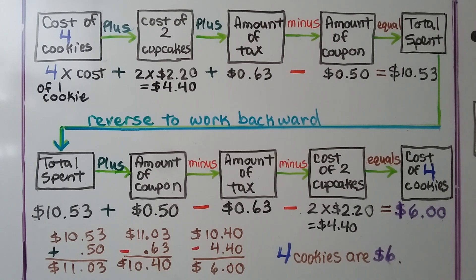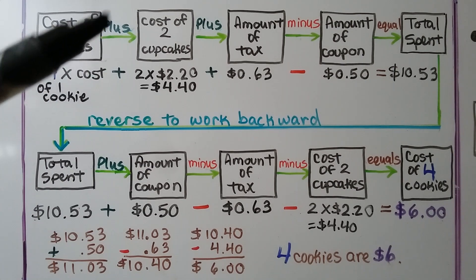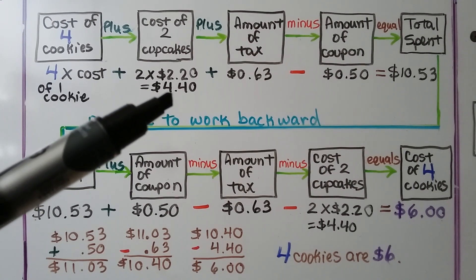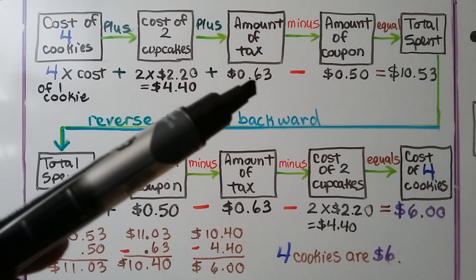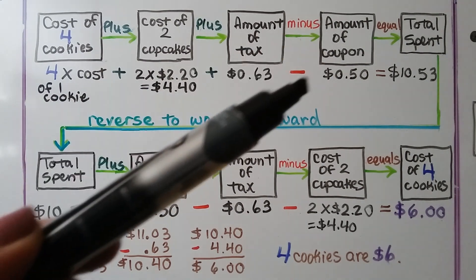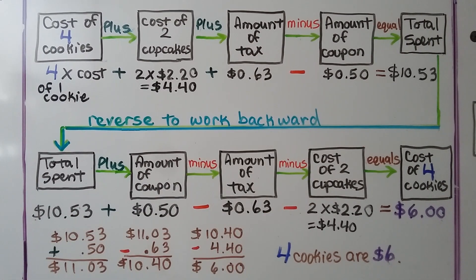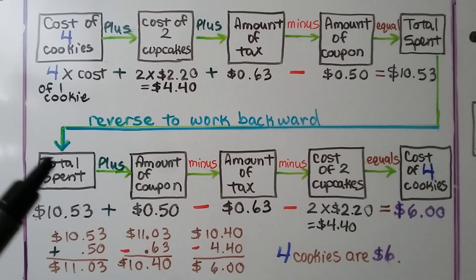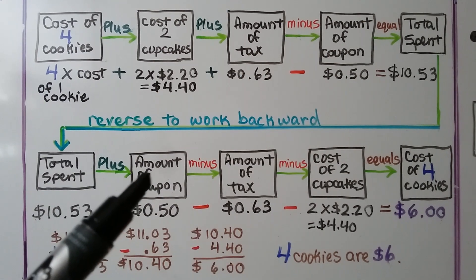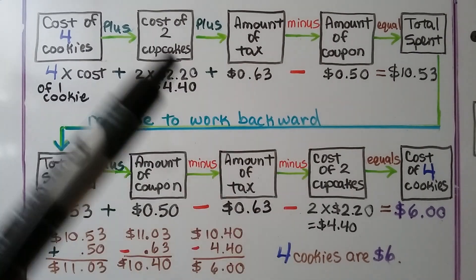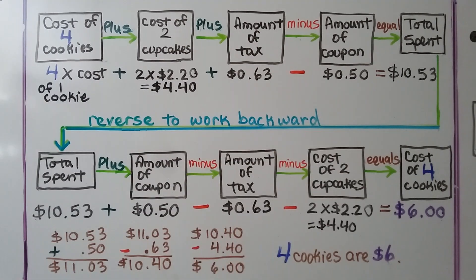In our flowchart, we start with the cost of four cookies — that's four times the cost of one cookie — plus the cost of two cupcakes at $2.20 each, so two times $2.20 is $4.40. Then we add the tax of $0.63, and subtract the coupon of $0.50, giving us the total of $10.53 that Emma spent. To work backwards, we place the total spent, the coupon, the tax, and the cost of two cupcakes into the reverse flowchart, which will equal the cost of four cookies.